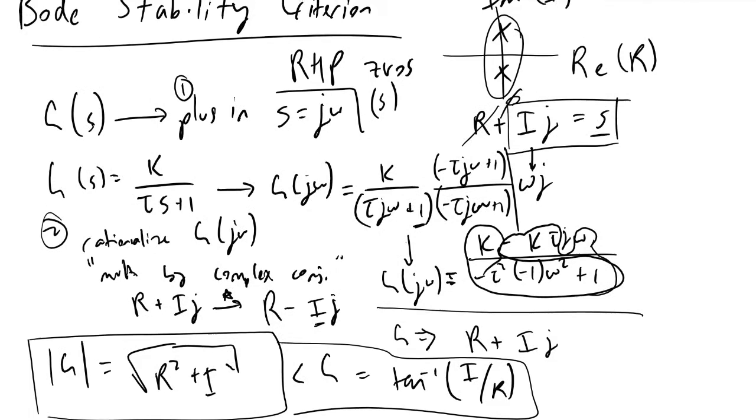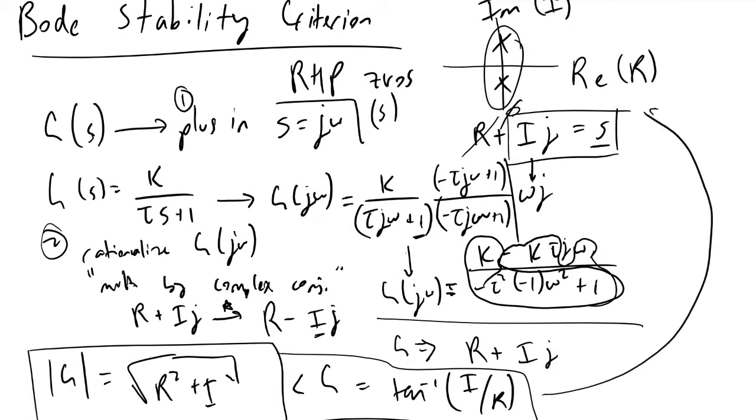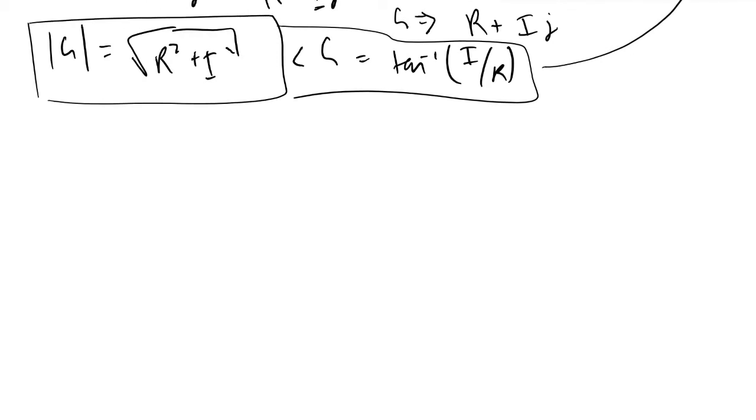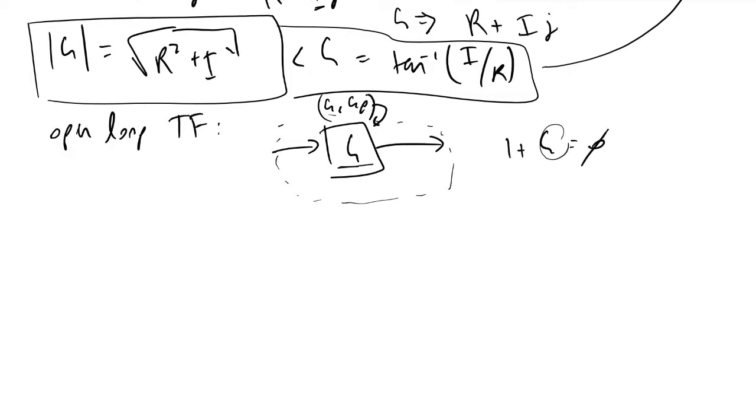If we analyze the open loop transfer function where we've got an input, some transfer function G (which can sometimes be the controller times the process transfer function), and consider this as an open loop and write our characteristic equation for it, we would arrive at 1 plus G must equal 0 as our characteristic equation. We would have 1 plus the product of all transfer functions inside our loop, which in this case is just G, equal to 0.